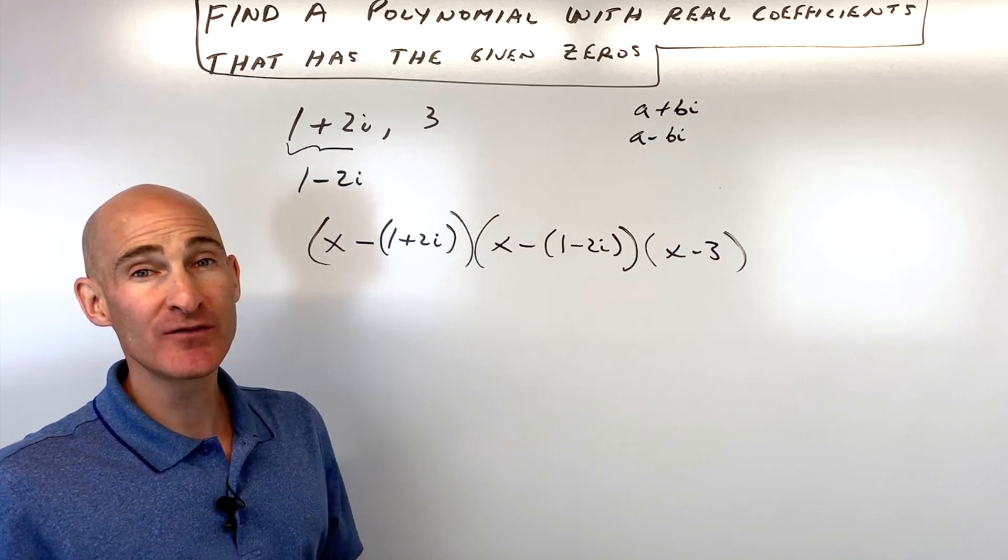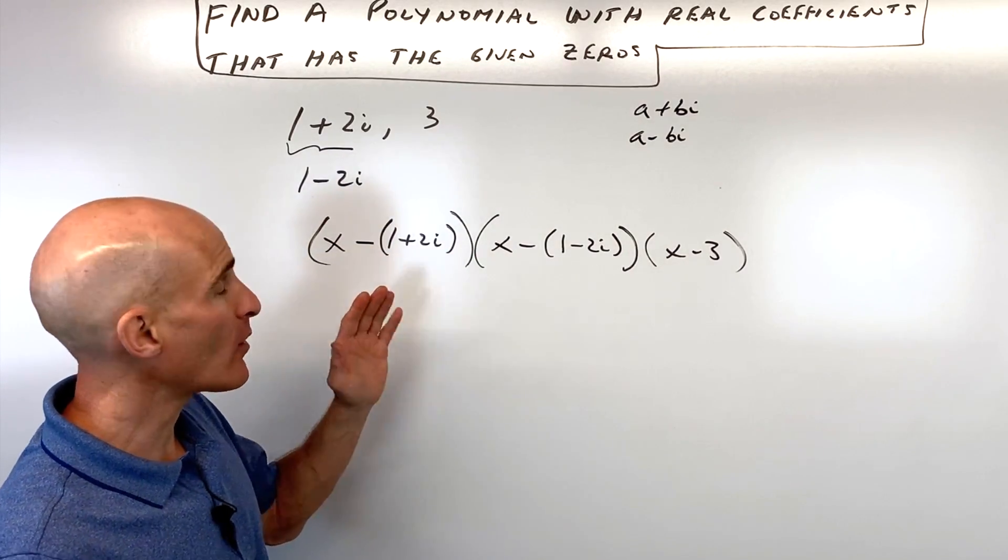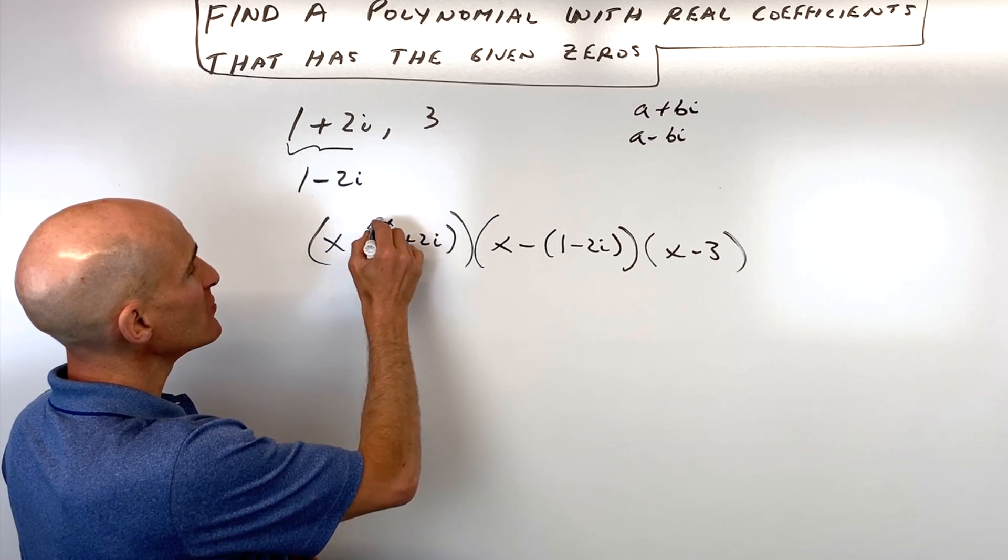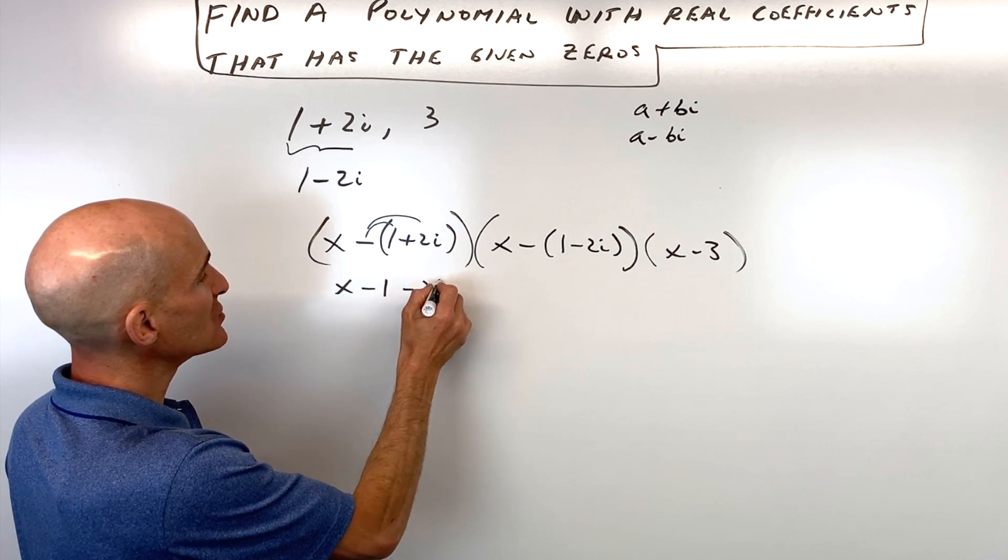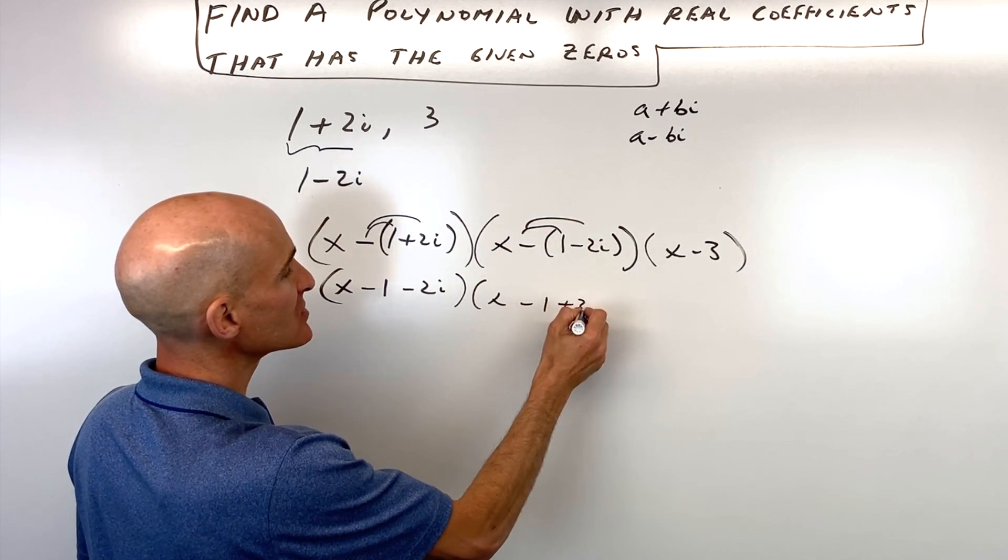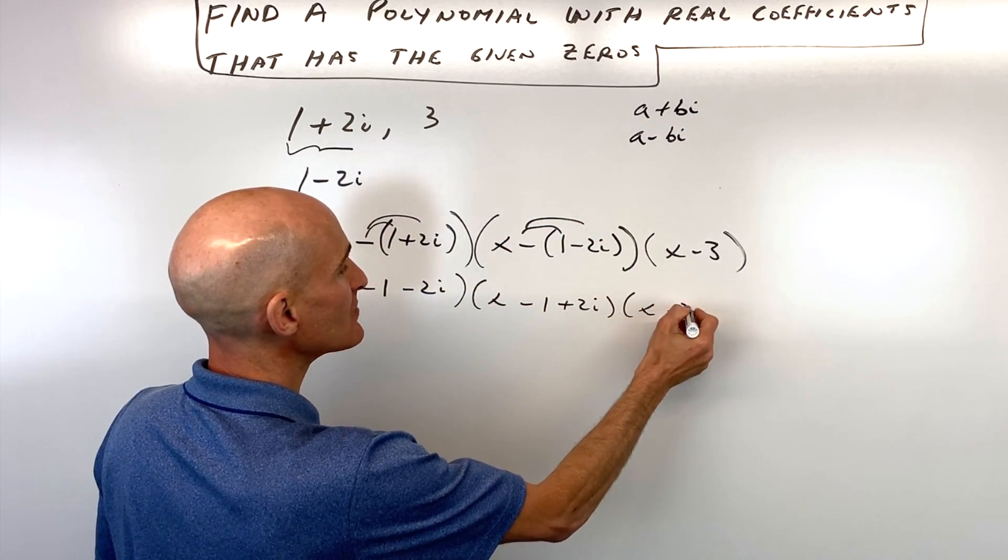Okay, so it looks pretty confusing here. How are we going to multiply this together? Well, I want to show you a shortcut. And the shortcut is, let's think about distributing this negative in here. So we get x minus one minus two i. Over here we have x minus one plus two i, and here we have x minus three.